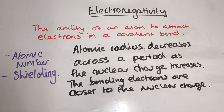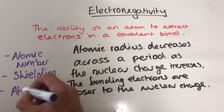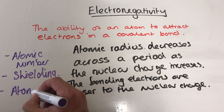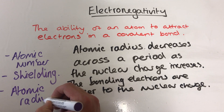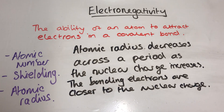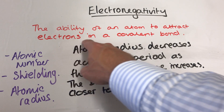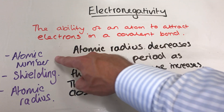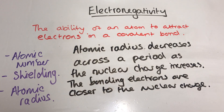So our three properties: number one, atomic number; number two, shielding; and number three, atomic radius. You're going to be expected to define electronegativity and then explain these three reasons behind the strength of electronegativity.